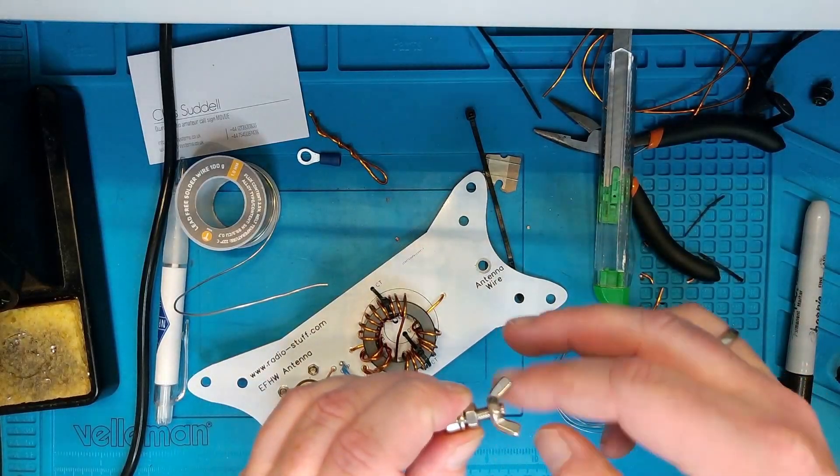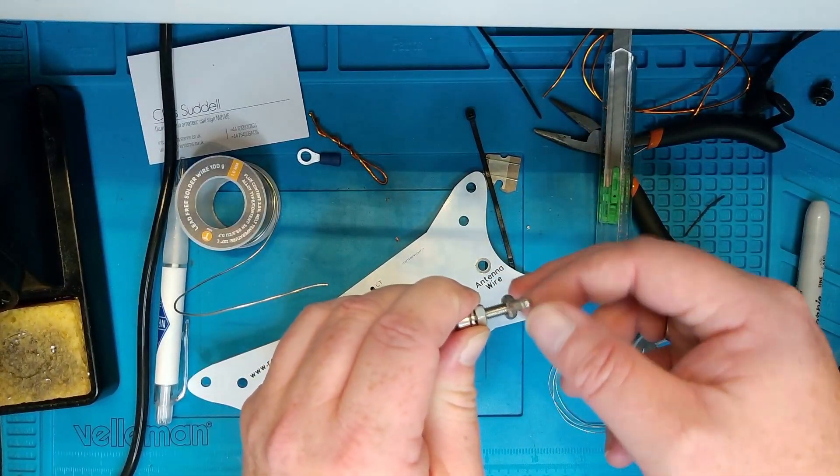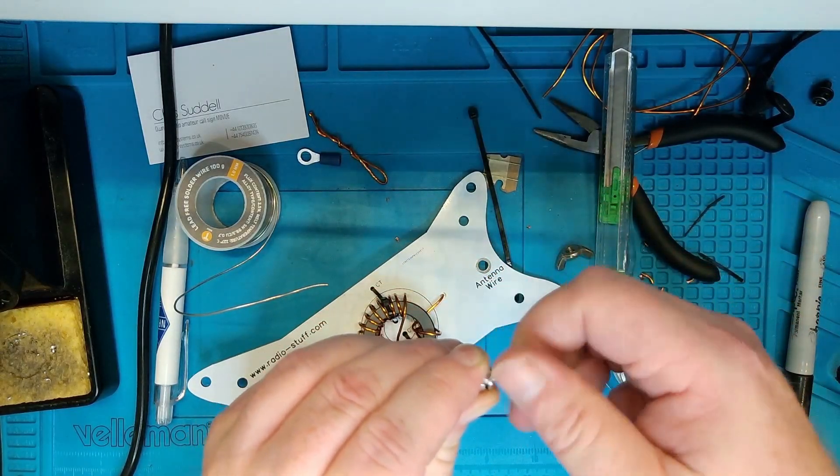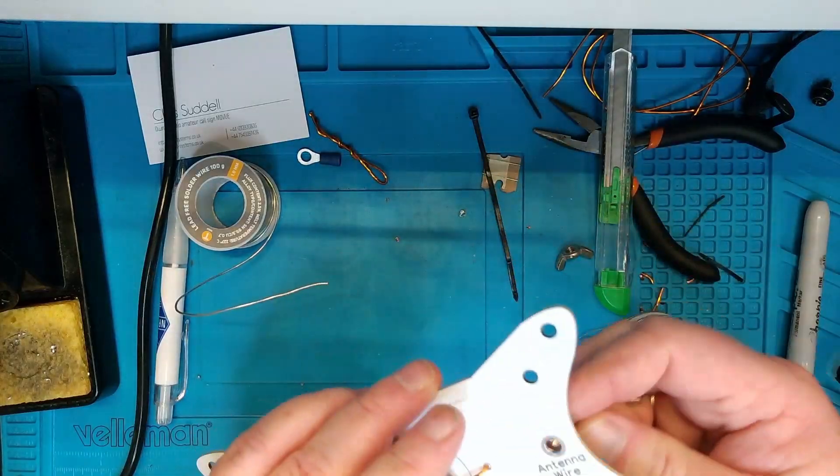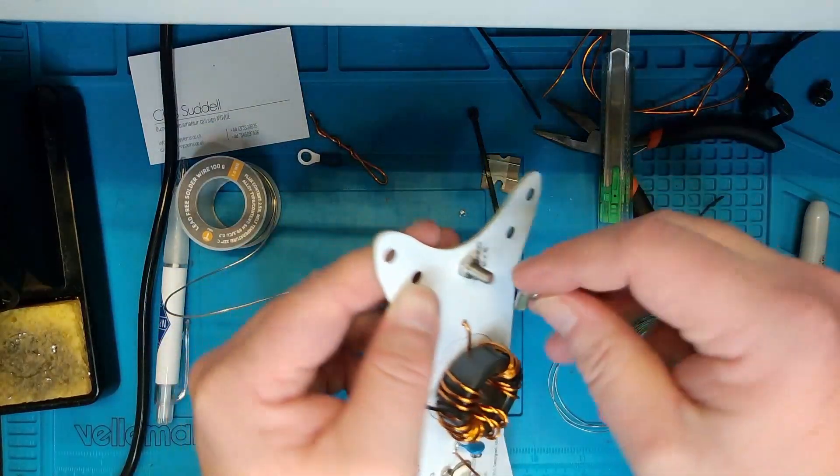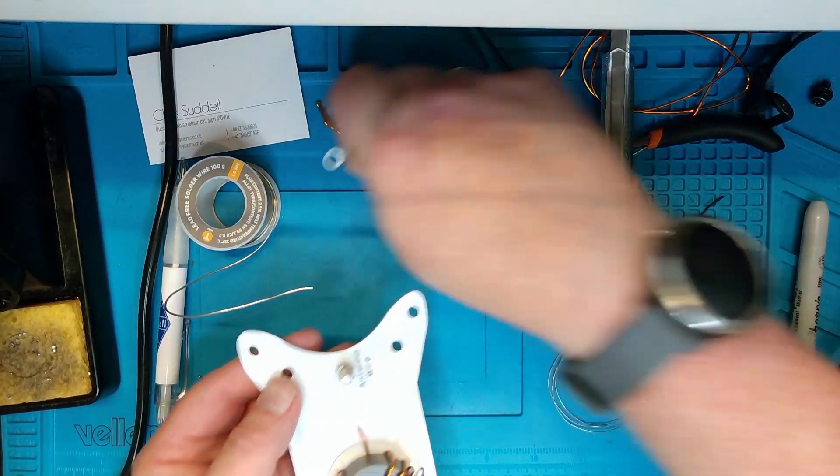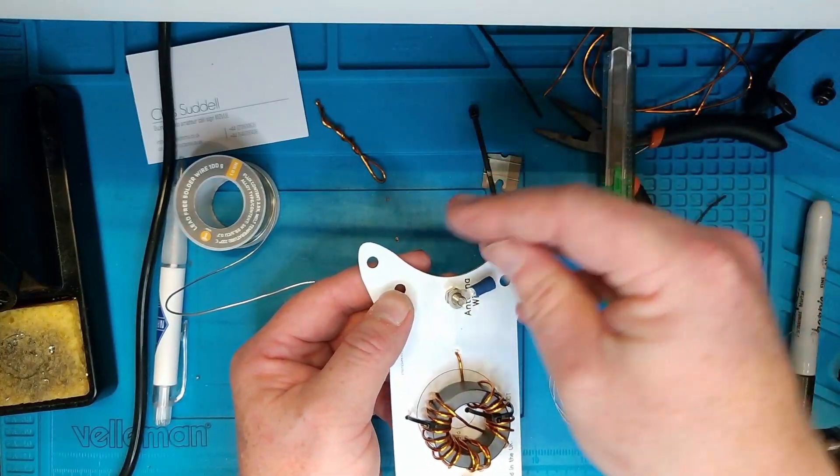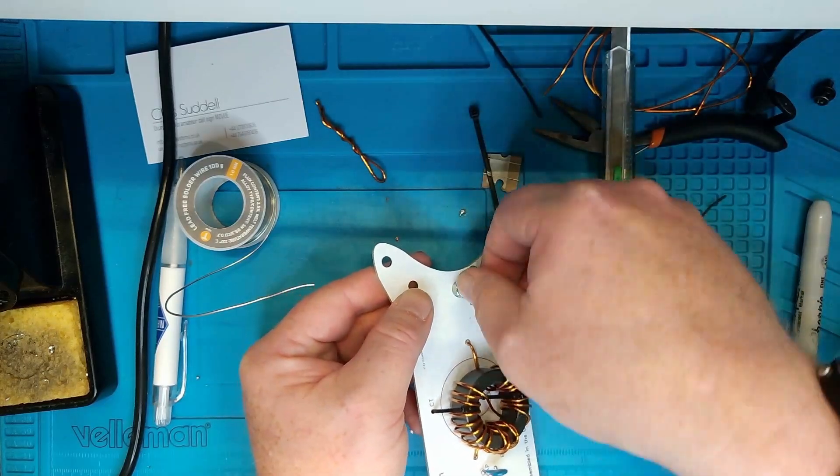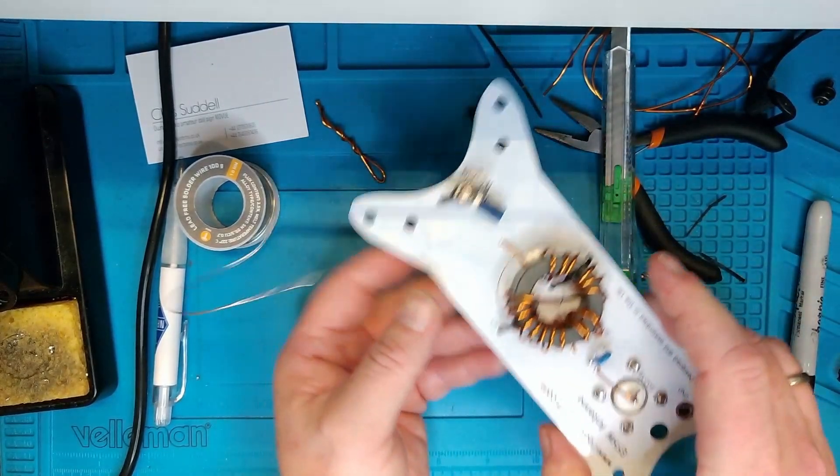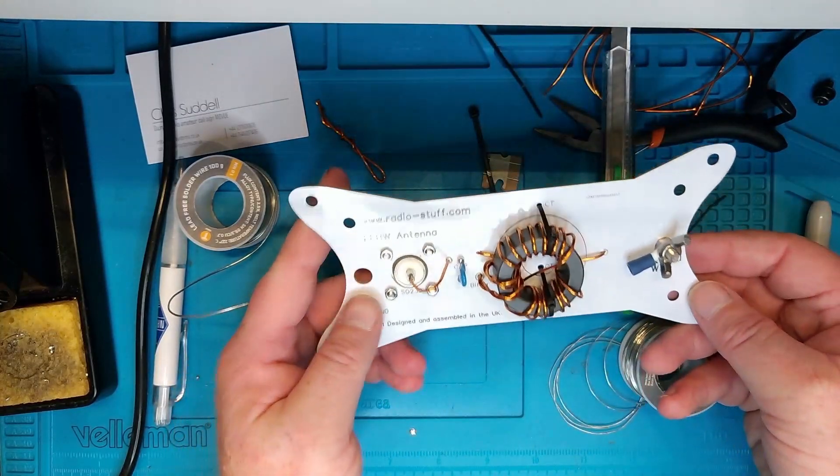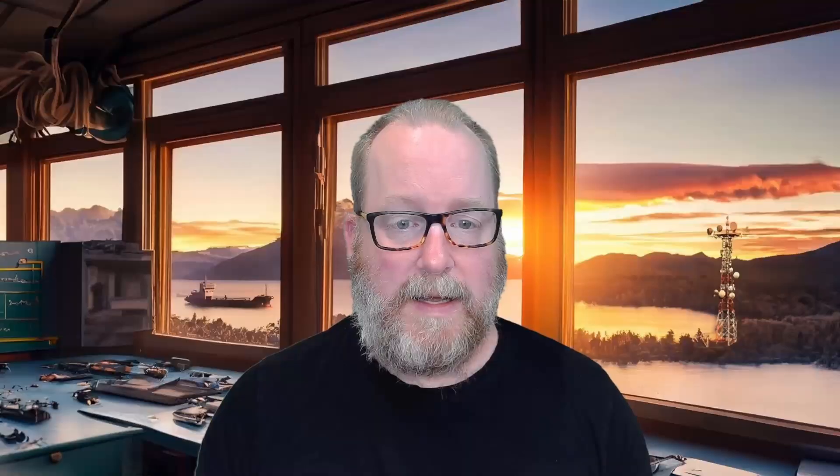Final thing of assembly is to get the wing nut and the screw on for the antenna wire. And we'll just put the ring terminal on as well. Like this. So there we go, that's the assembly of the RadioStuff NFED half-wave antenna. And that's the build.